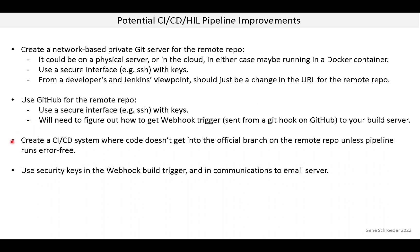The next improvement is a system I have seen a few times. In this class, when we had some code ready, we would simply push it to the remote repo. In this case, you do something similar, but the code actually doesn't go into the remote repo — at least not on the official branch — until the pipeline runs without error. So it prevents bad code from ever getting in. A key to this being successful, and I can speak from experience, is to ensure that the automated tests and the pipeline in general are very reliable. It can be frustrating to developers and hurt productivity if their submissions get rejected due to some build issue unrelated to their code.